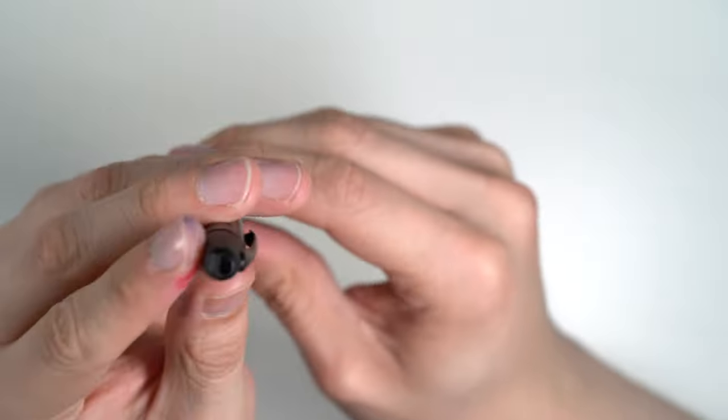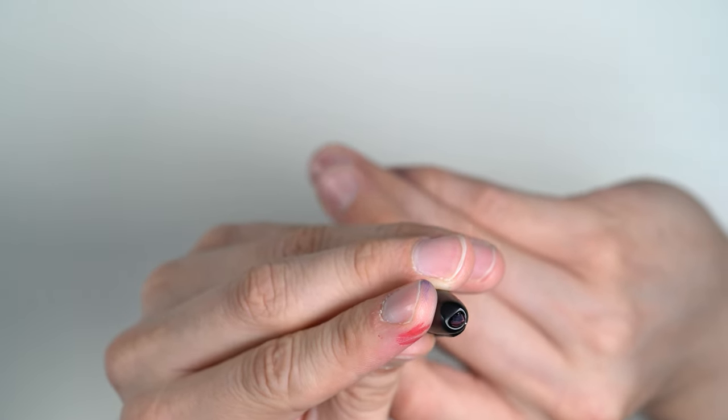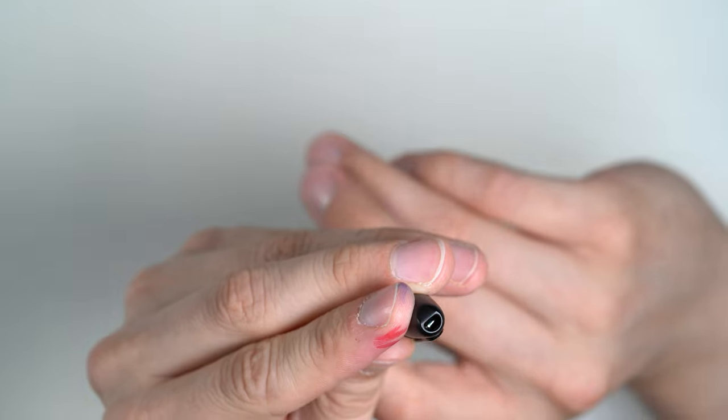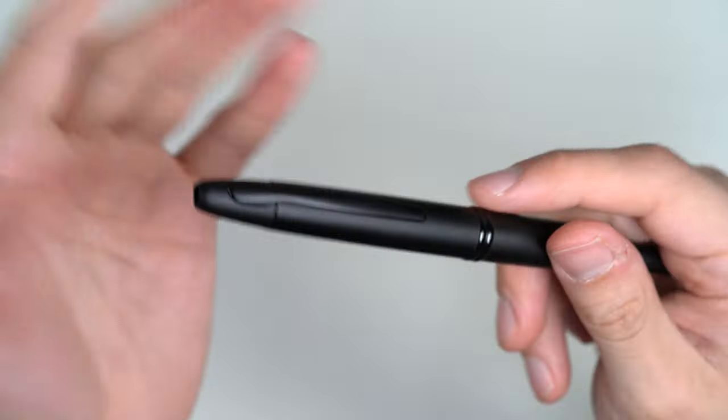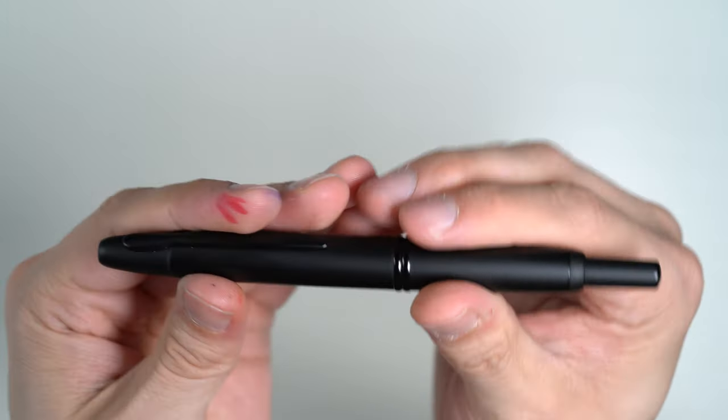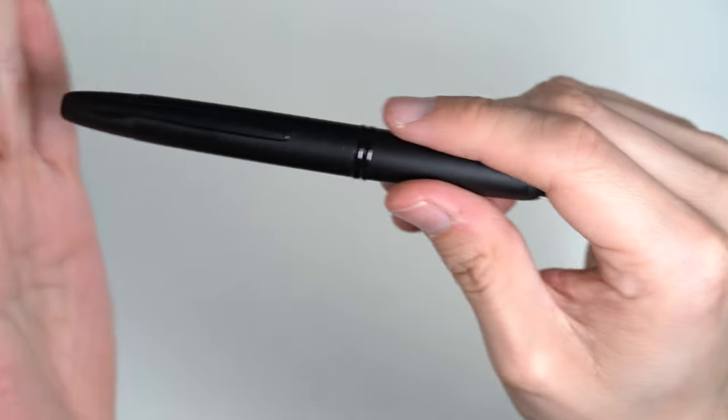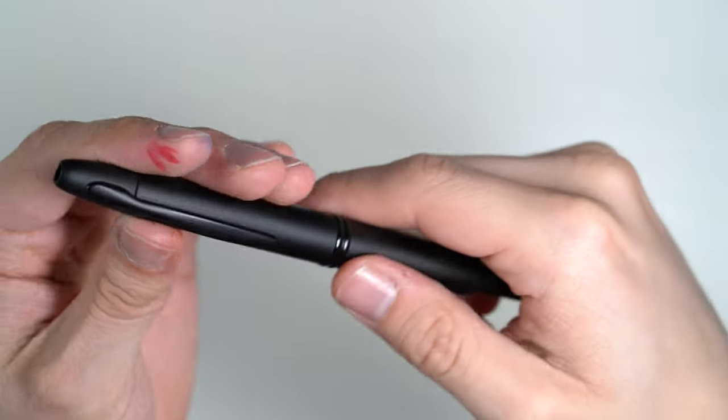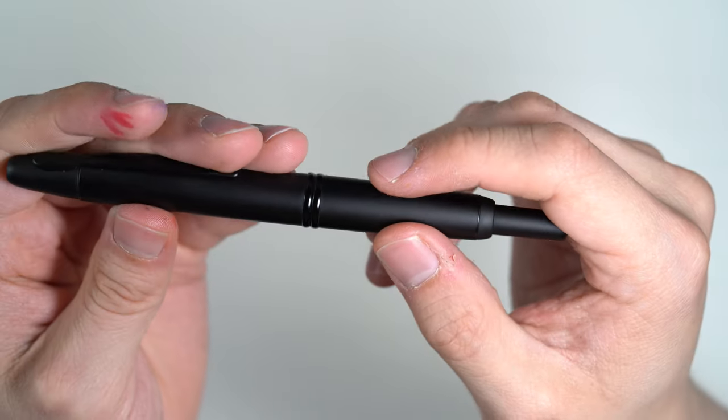The way the pen works is there's a little door here. When I push on this click, that little door comes down and the nib comes out. When the pen is clicked, it's completely sealed. I've never had any issue with the pen drying out or hard starting. These pens really seal that nib, so it's not an issue.